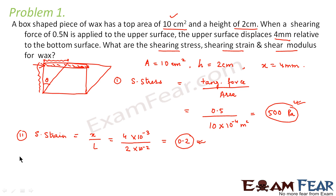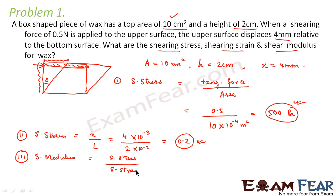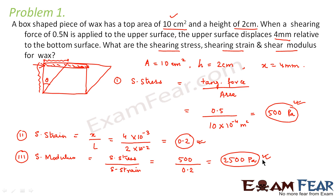Now let us find the shear modulus. Shear modulus is shearing stress divided by shearing strain. Shearing stress is 500 Pascal divided by shearing strain 0.2, which comes out to be 2500 Pascal. So this is the value of shear modulus for wax.